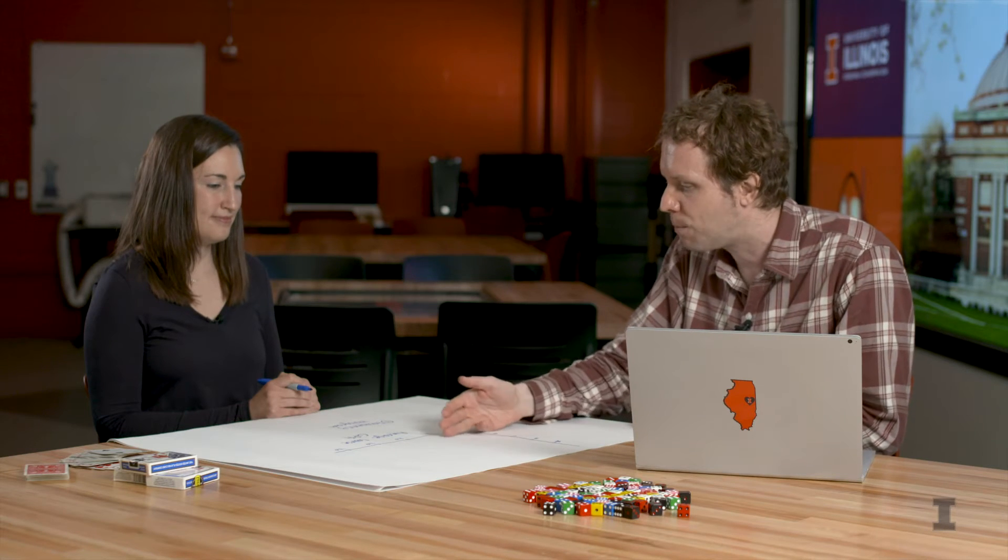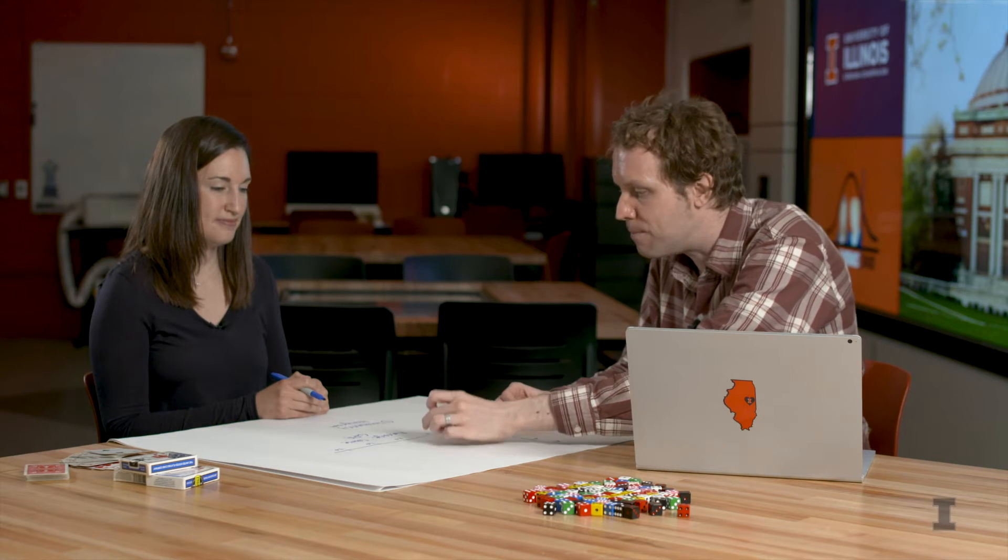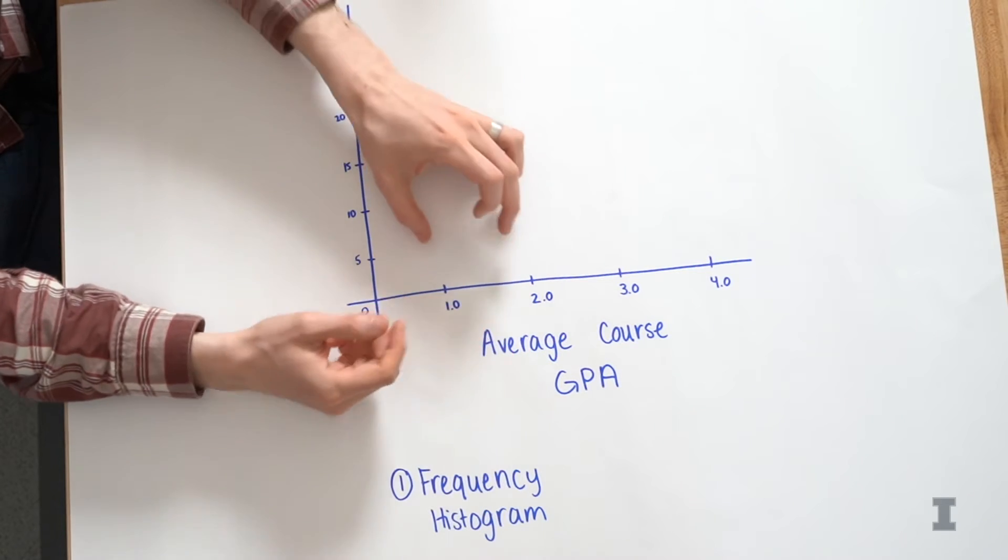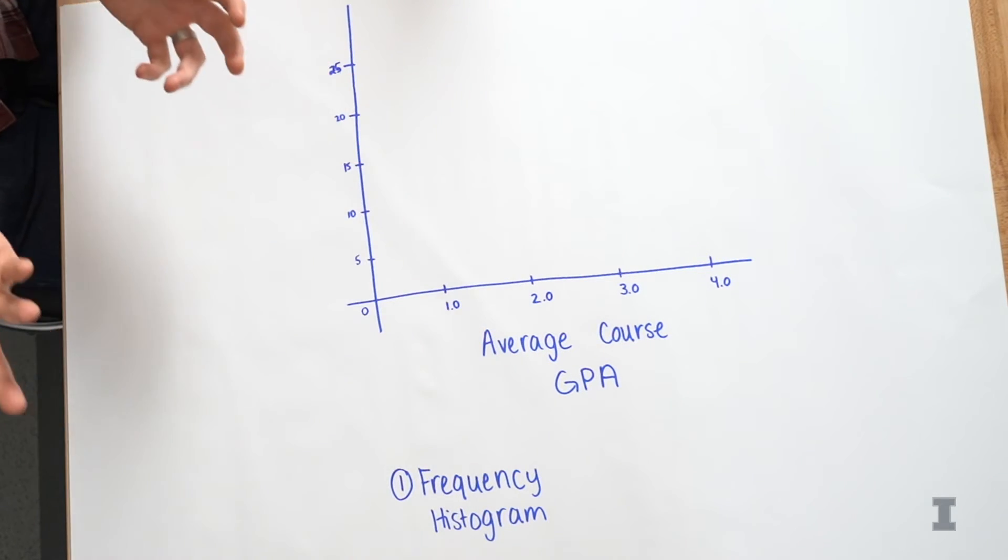So there's any possible value between 0 and 4 that can happen. And if you imagine individual bars, we'd have thousands of individual bars. Instead, by grouping things together, we can create bins, which includes every single course that has a GPA between maybe 1 or 2. But what kind of bins do you want for this graph?